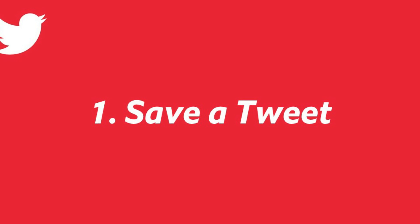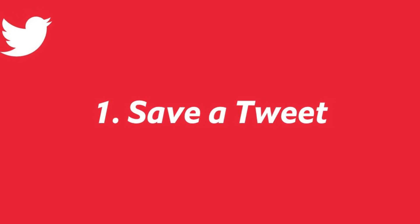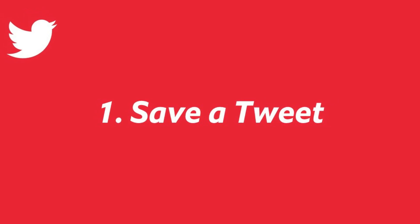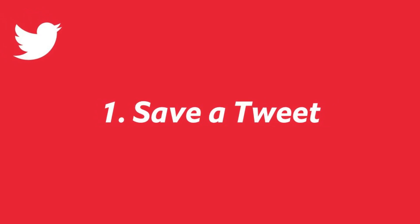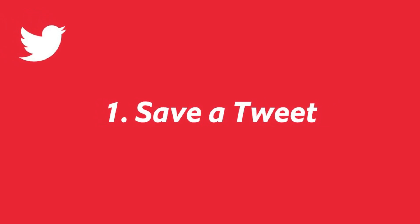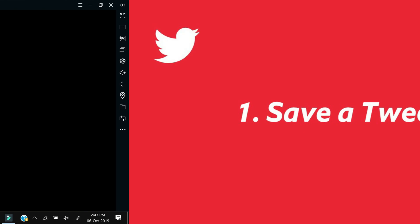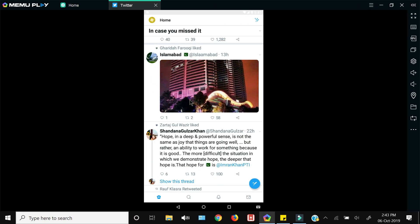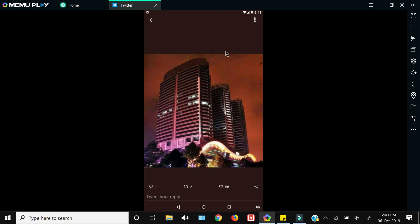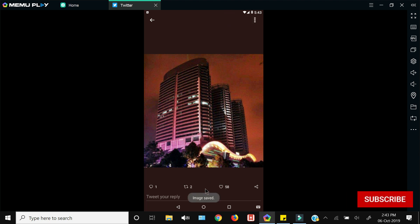The last tip is that if you want to save something you've seen on Twitter — whether it be a video or an image — you can do that by clicking on that image, going to the three vertical dots on the top, and clicking 'Save'. That image will be saved to your account.